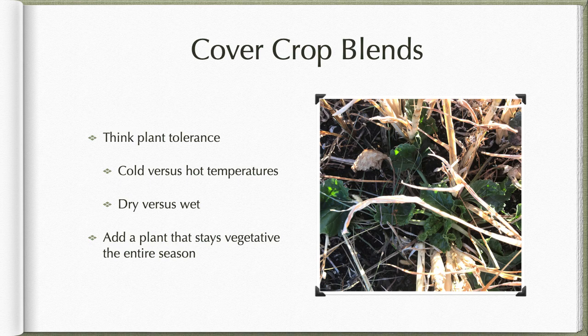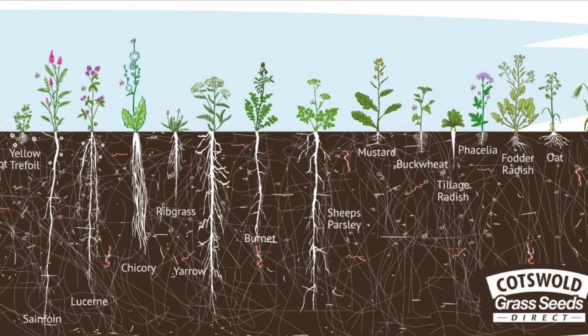If you go to Cotswold Seeds — they're an English seed company — they have some really nice PDFs you can download from their site. You have to translate them a little bit because terms like lucerine mean alfalfa, ribgrass means plantain, and cocksfoot means orchard grass. But besides that, you get to see what these rooting systems look like.